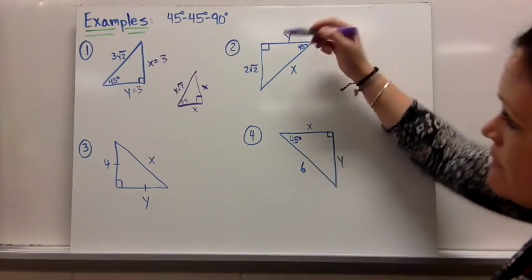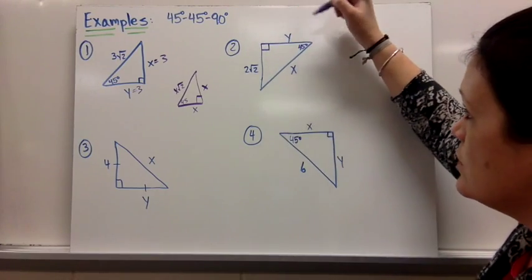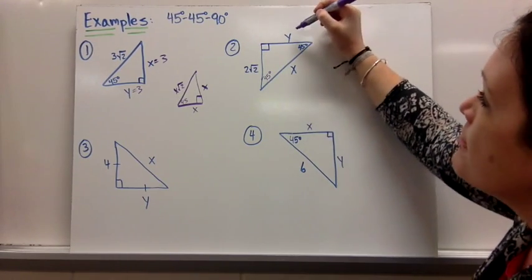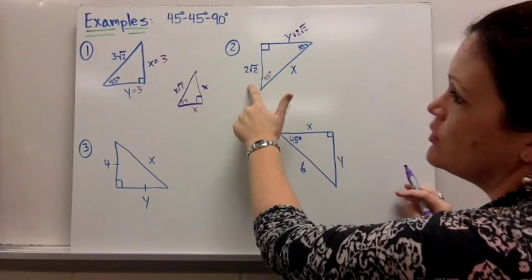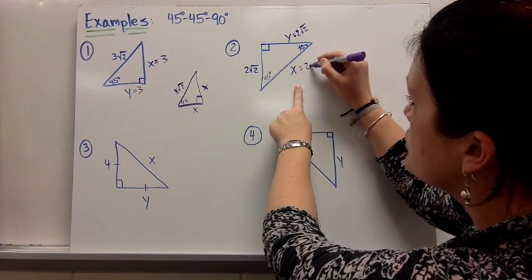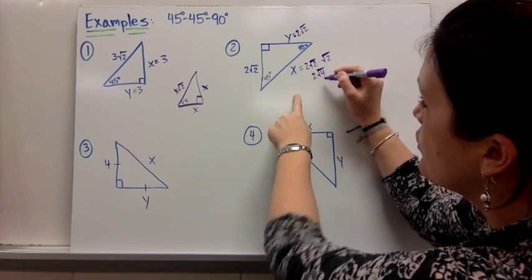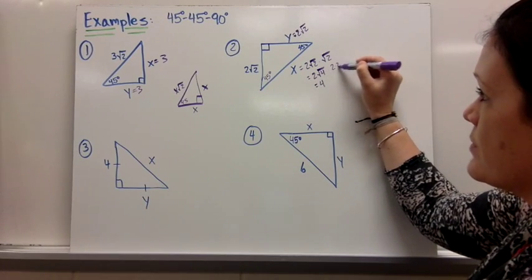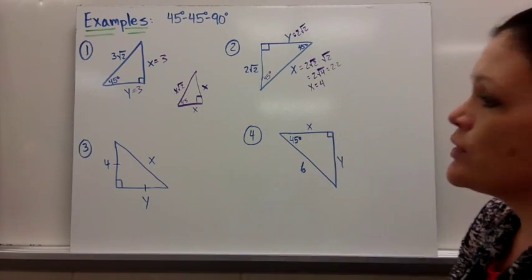For number 2, I'm given a leg of 2 square root 2, not the hypotenuse. Since both angles are 45 degrees, y also equals 2 square root 2 because the legs are equal. The hypotenuse x equals 2 square root 2 times the square root of 2, which is 2 times the square root of 4, which reduces to 2 times 2, giving us 4. So x equals 4 and y equals 2 square root 2.